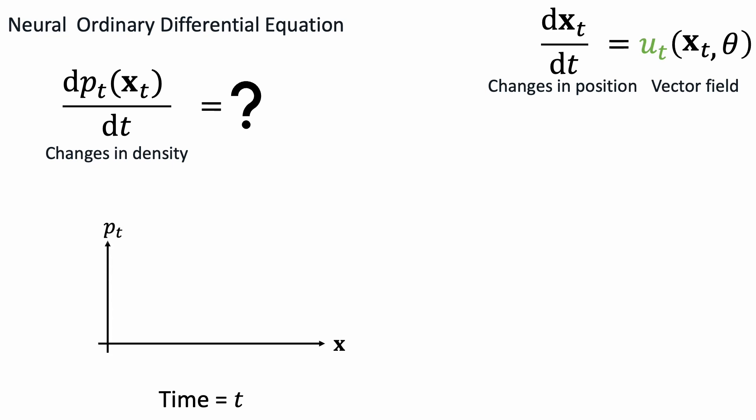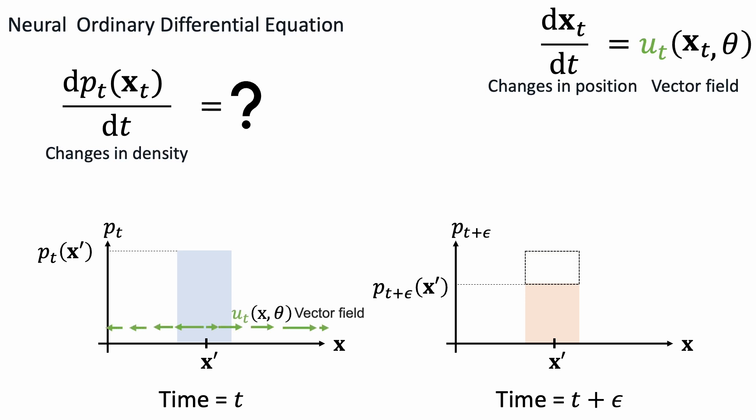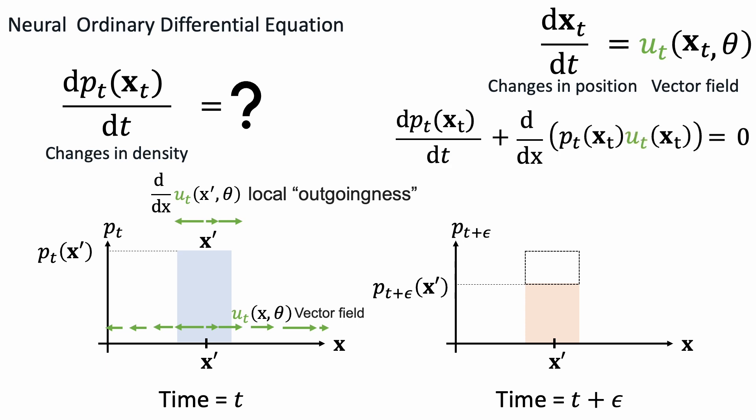Let's use a 1D example to build out some intuitions. Here we plot the probability distributions over x at time t. For a specific position x-prime, we have a probability density of pt of x-prime. At time t plus epsilon, let's say, the probability density becomes lower at the same position. How can we explain this with our vector field? At this position, the vector field must have pushed the samples away from the position. We can use the spatial gradient of the vector field to quantify the local outgoingness, or in other words, how much it diverges. When the vector field flows into this position, the spatial gradient will be negative.